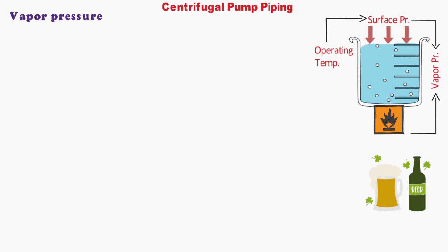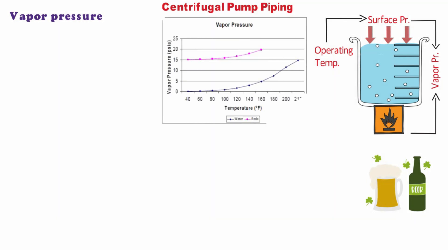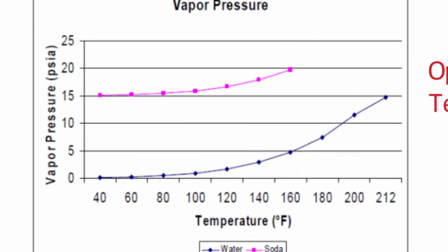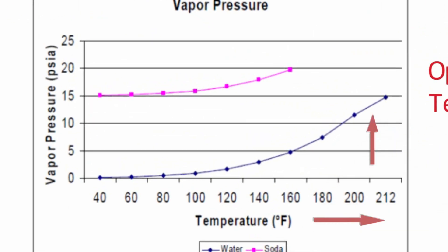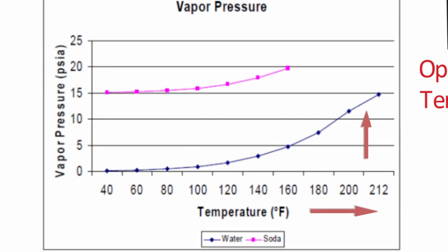Here we can see a graph plotted against temperature versus vapor pressure for soda and water. We can see that when the temperature rises, the vapor pressure also rises.